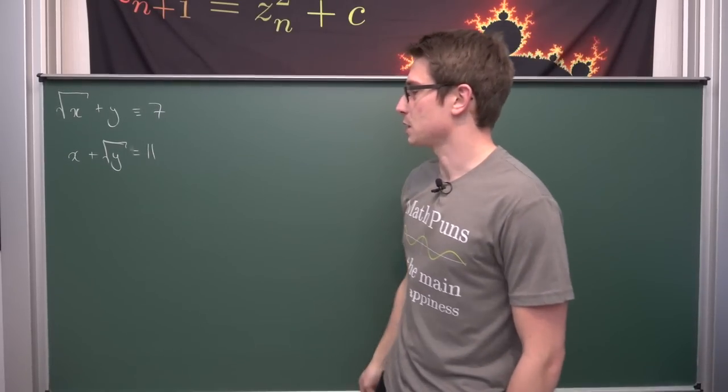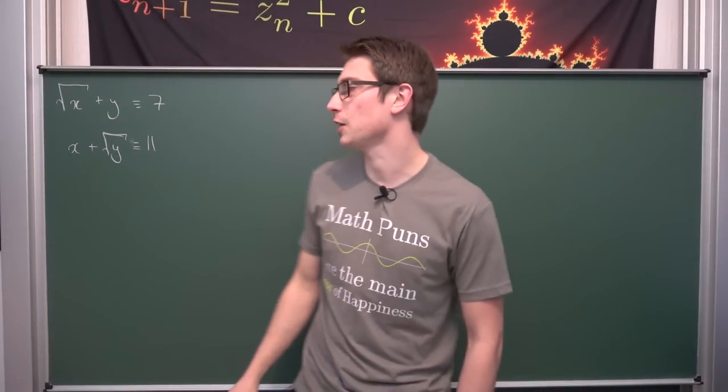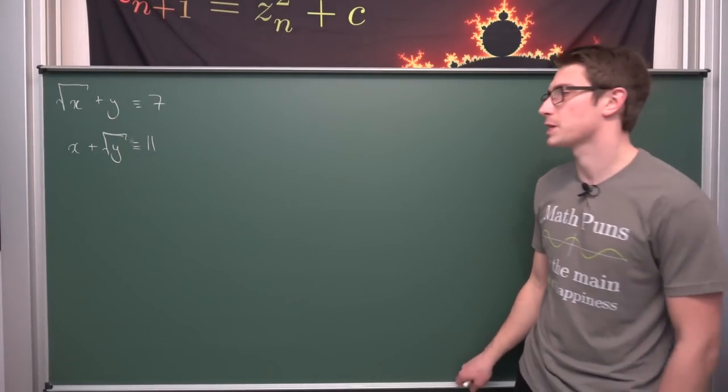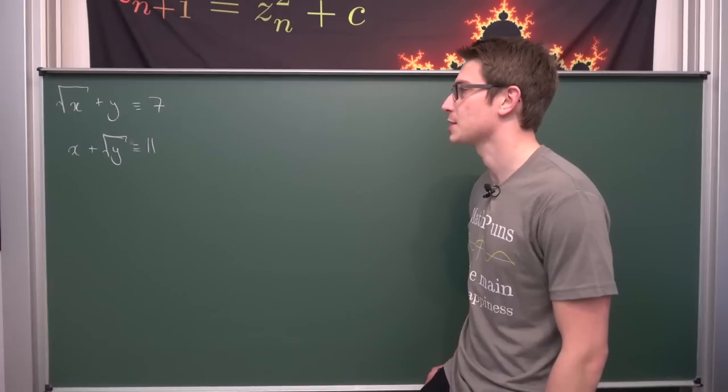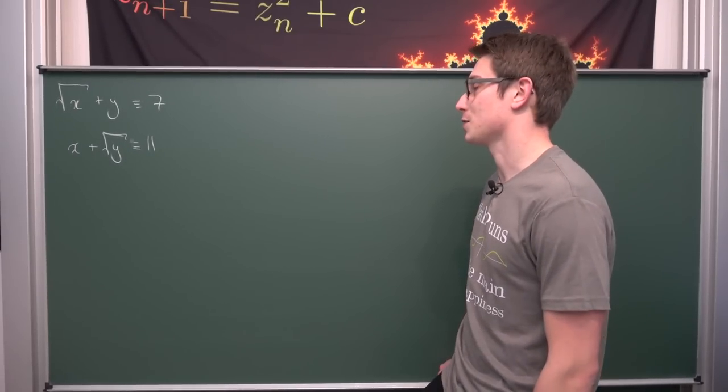No, that's not a congruent sign, that's a third stripe on the equals. That means identically equal. I just like to use it from time to time. And we want to solve this one today.